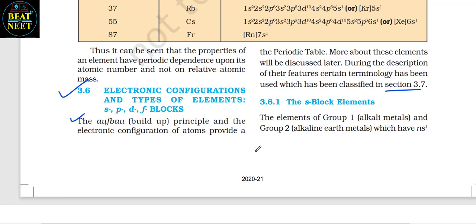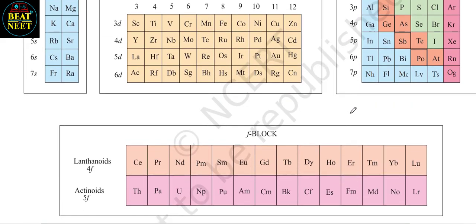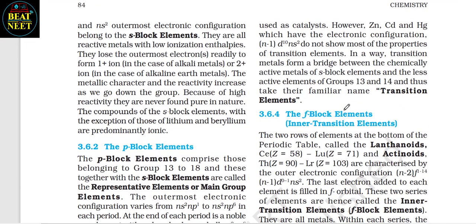3.6.1 The s Block Elements. The elements of Group 1 and Group 2 — alkali metals and alkaline earth metals — which have ns¹ and ns² outermost electronic configuration, belong to the s block. They are all reactive metals with low ionization enthalpies; they readily lose the outermost electron to form 1+ ions (alkali metals) or 2+ ions (alkaline earth metals). Metallic character and reactivity increase going down the group. Because of high reactivity, they are never found pure in nature. The compounds of s block elements, with the exception of lithium and beryllium, are predominantly ionic.